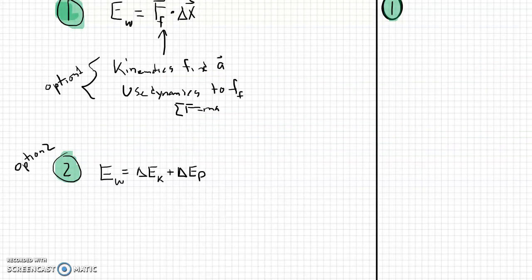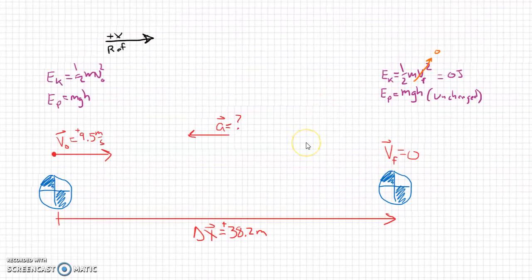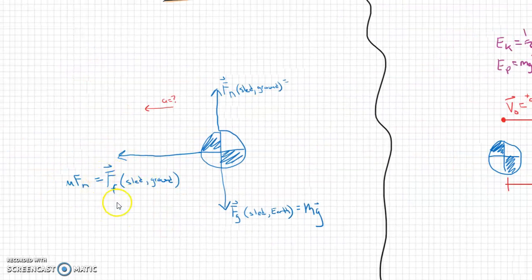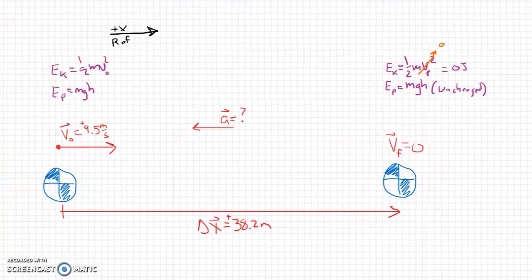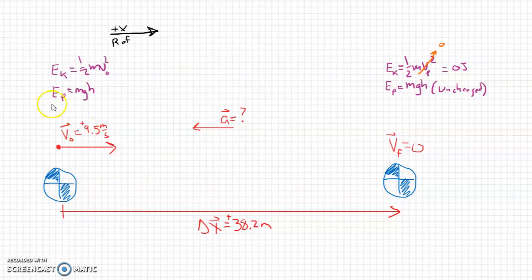Now option two looks a little like this. We know that doing work can change energy. Doing work to a system can change the energy of that system. So let's go back and take a look at our picture and how this comes into play. Basically, what we have is that force of friction, which we drew over here in this picture. That force of friction, which was a leftwards force, causes this mass, the sled, to accelerate.